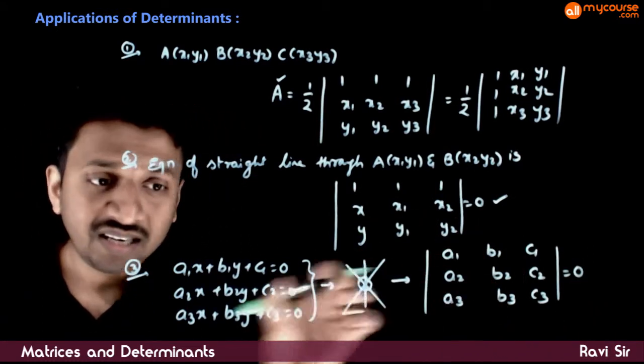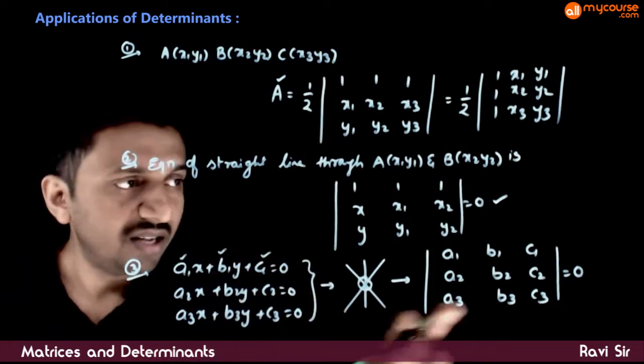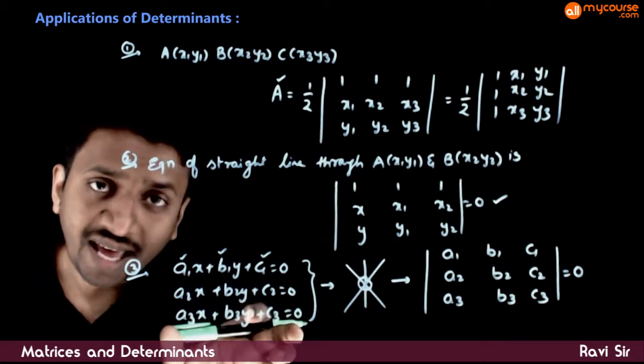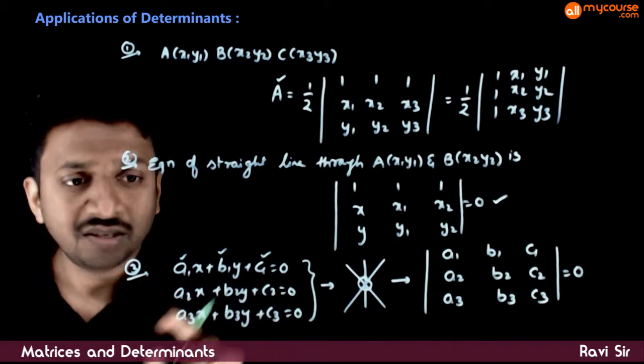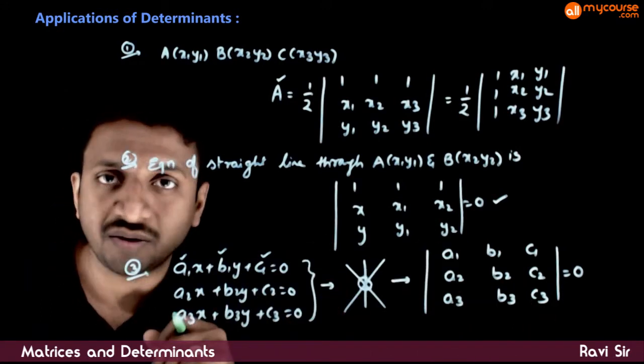If this determinant formed by the coefficients equals 0, then the lines are concurrent. That is the condition for concurrency: if the lines are concurrent, then this determinant equals 0.